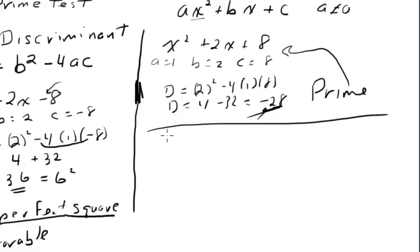One last example. Let's take 2x² - 8x + 5. Again, the variable doesn't have to be x, it can be any letter. So in this case, I get a is equal to 2, b is equal to -8, c is equal to 5.